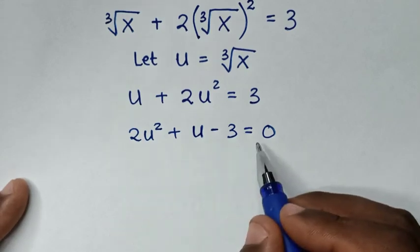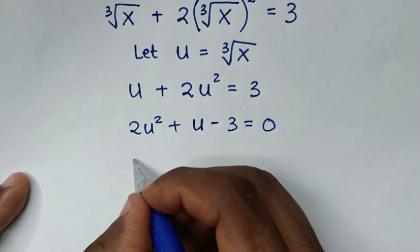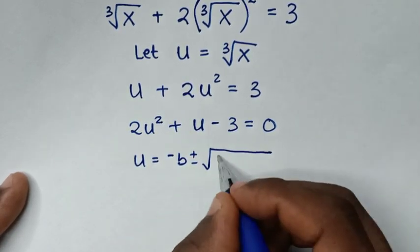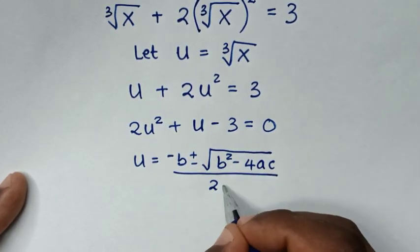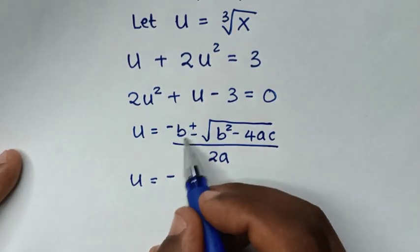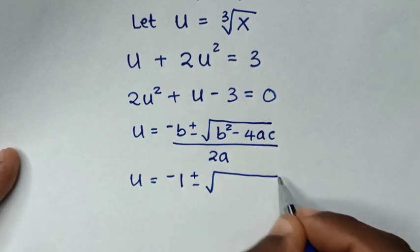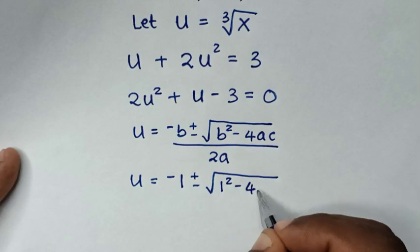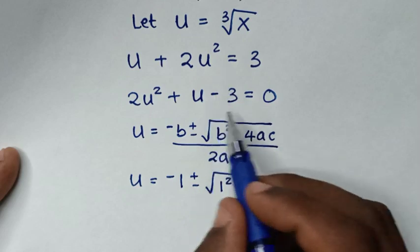To solve this quadratic equation we'll use the quadratic formula to find the values of u. The quadratic formula is u equals negative b plus or minus square root of b squared minus 4ac, over 2a. Here b is 1, a is 2, and c is negative 3.